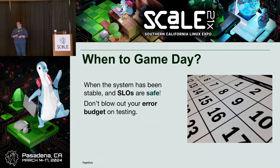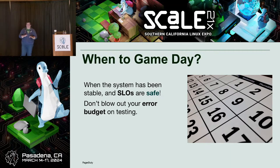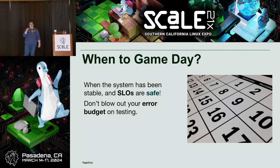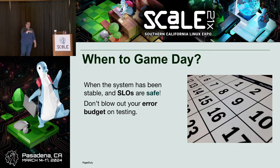If you're going to do it in production, you want to be very conscious of how it's going to impact your users. You don't have to do these in production — you can run game days in other environments to get practice, flex all the things you need to flex, and make sure alerts are defined correctly. Originally, folks pitching chaos engineering said you have to do it in production — but no, you absolutely do not. If you are going to do it in production, do it at a time when the system is stable. If you're working with SLOs and error budgets, make sure you have space: don't blow out all your error budgets on testing, because you won't have any left if a real incident happens.